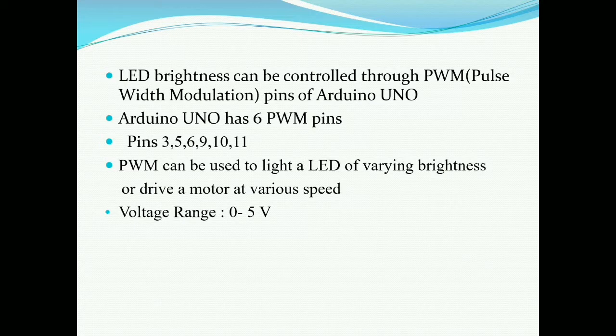The voltage range that the PWM provides is from zero to five volts. That means we can produce a minimum of zero volts and maximum of five volts on any one of the PWM pins of Arduino UNO board. The value range is from zero to 255. The value range of zero corresponds to zero volts, and 255 corresponds to five volts.